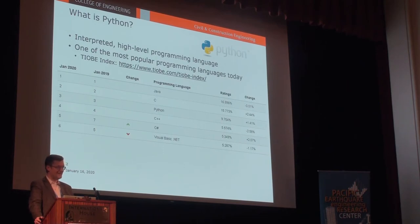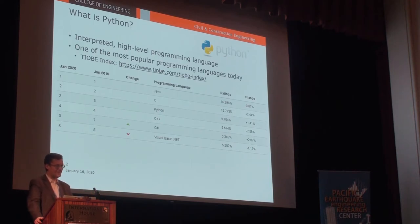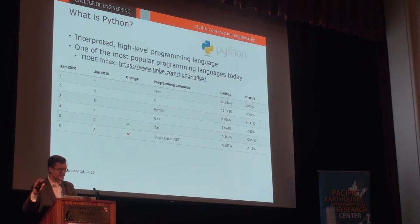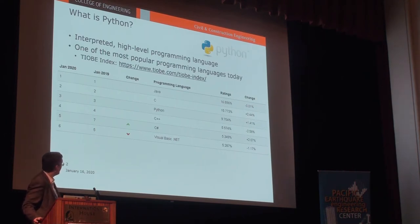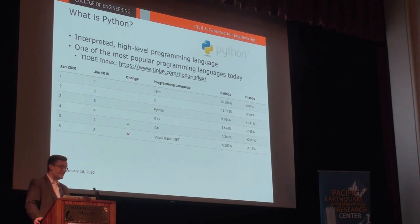So, what is Python? It's an interpreted, high-level programming language. Interpreted means it's not compiled - it's just executed on the fly. High-level means you can write functions, make it communicate with other codes, do control structures like loops and all that. It's also one of the most popular programming languages today. If you look at the TIOBE index, which is a pretty objective ranking of programming languages, as of this month, Python is the third most popular programming language, behind Java and C.